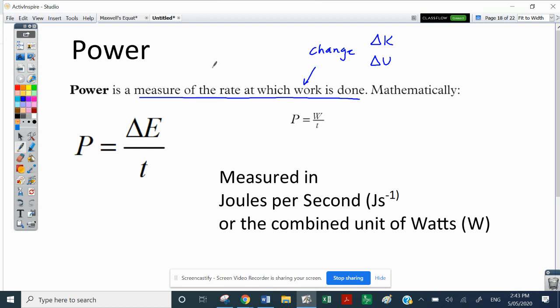So rate in this case here means per time. So it's how fast we are changing kinetic energy or transforming or transferring kinetic energy or transferring or transforming gravitational potential energy.